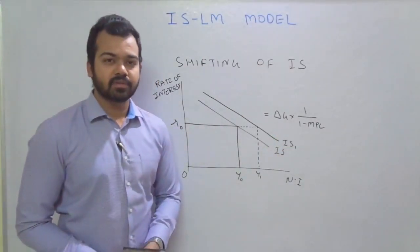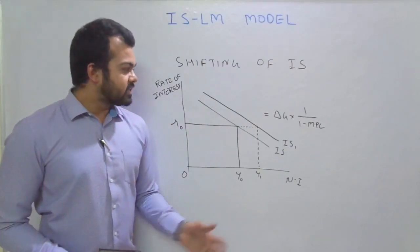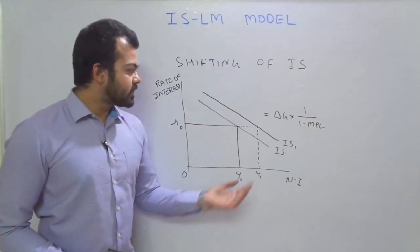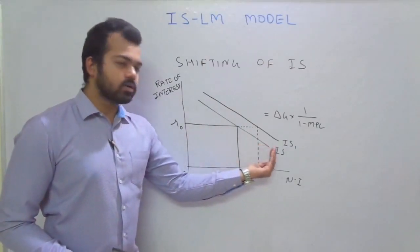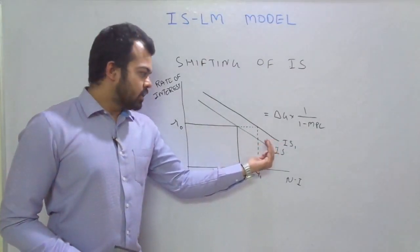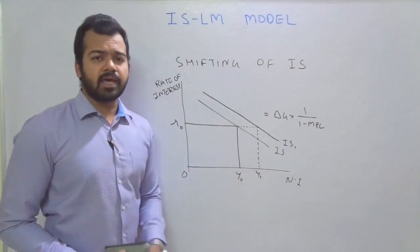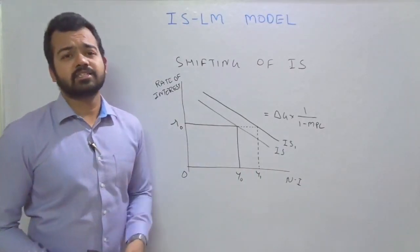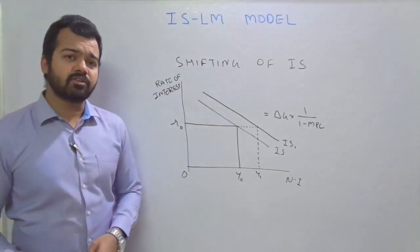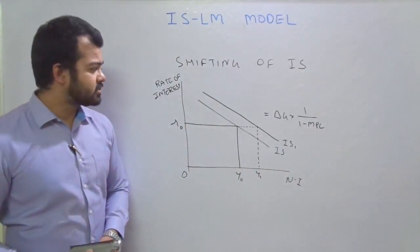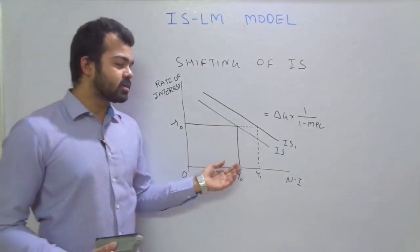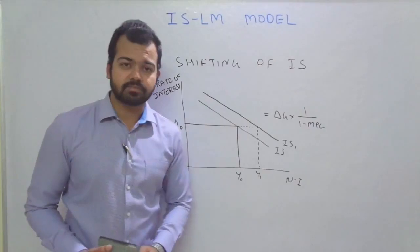Similarly, the IS curve can also shift inward by imposing taxes or by reducing government expenditure — it works in the same direction in reverse.